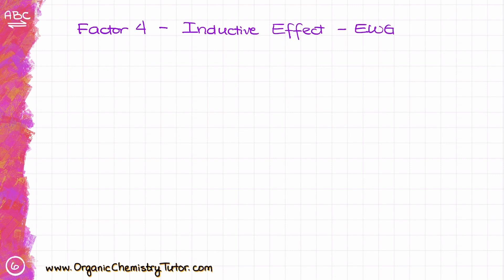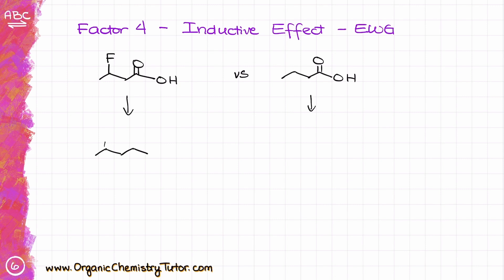Factor 4 is the inductive effect, or the presence of electron-withdrawing groups. Consider two carboxylic acids: one with a fluorine atom and one without. When we make the conjugate bases, both have the same resonance, both have the negative charge on oxygen — so no difference from resonance, atomic size, or electronegativity perspectives. The difference comes from the inductive effect: fluorine, being extremely electronegative, pulls electron density towards itself, indirectly stabilizing the negative charge on the carboxylate.